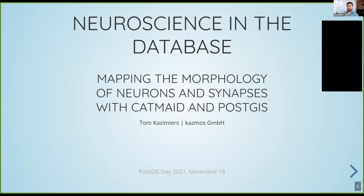I'm going to talk about a smaller niche of the free software world where we use PostGIS to represent neurons and synapses to model brains in a 3D space. This happens in a software called CatMate, which is a collaborative web-based tool for online 2D and 3D image browsing, image annotation, neural reconstruction, proofreading, and of course network analysis for those neurons that live in this space. There's a clear neuroscience focus, but it's got other uses too whenever you want to display large 3D image data on the web.